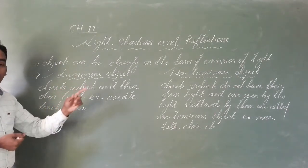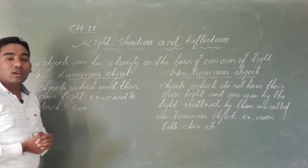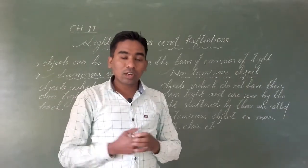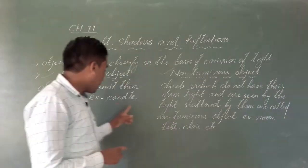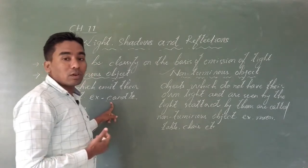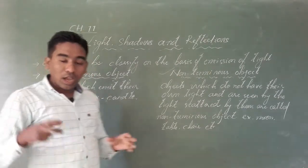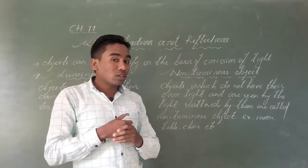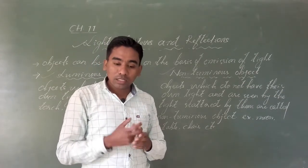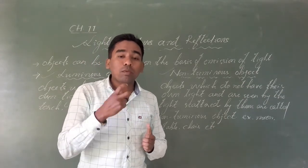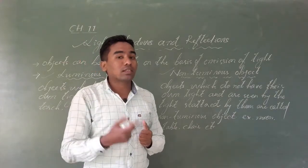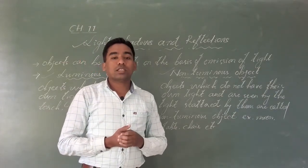What do we mean by luminous objects? The objects which emit their own light are known as luminous objects. For example, the sun emits its own light; a candle, after burning, emits its own light; and a torch, after switching it on, emits its own light.